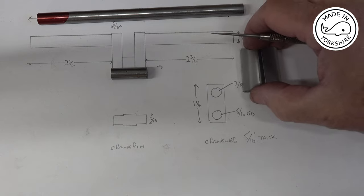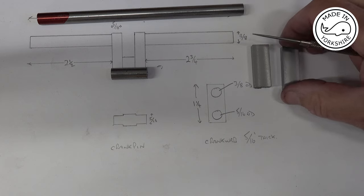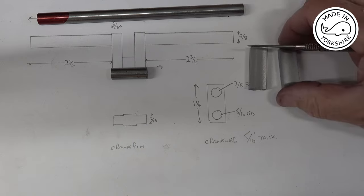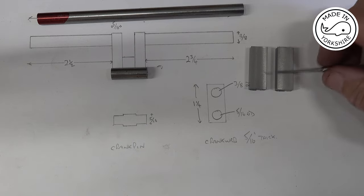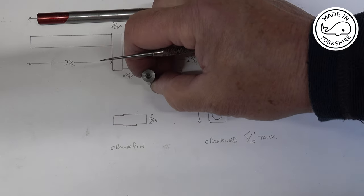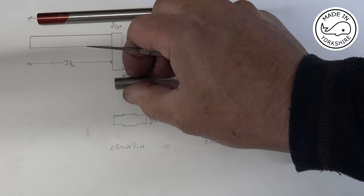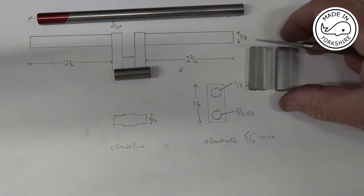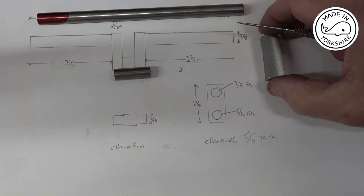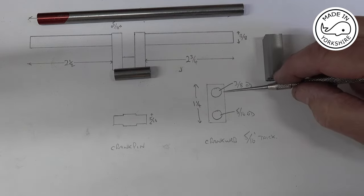For the crank webs I'm going to use these pieces of mild steel which are the correct thickness and width, but these need to be cut to length. I've put little centers on each end just in case. First I'll super glue these together and go over to the mill and mill them to length, then I can mark them up for these holes.